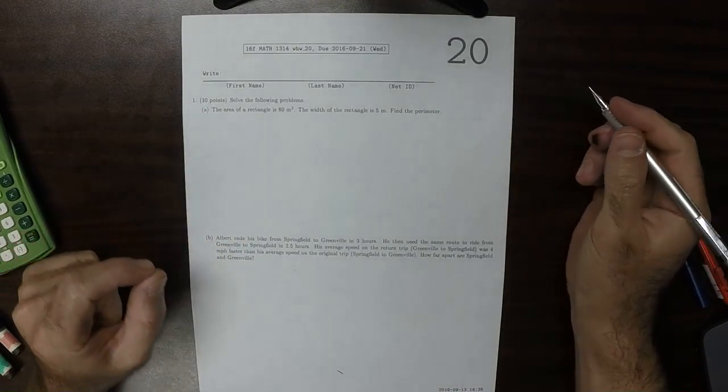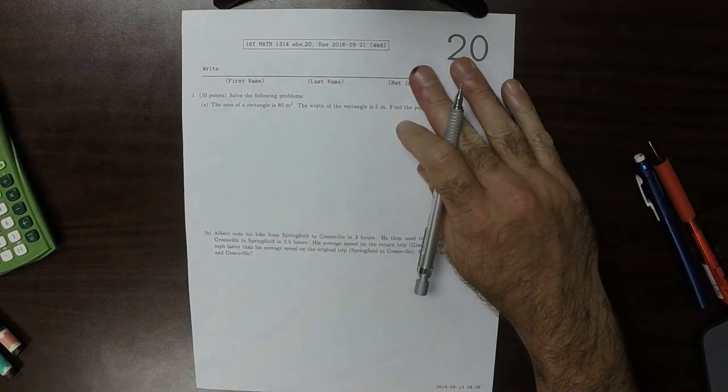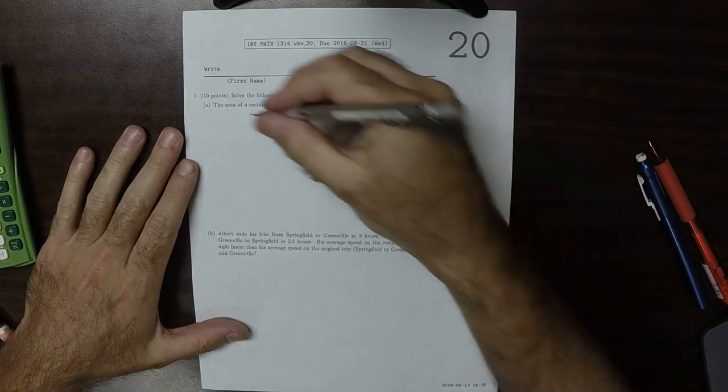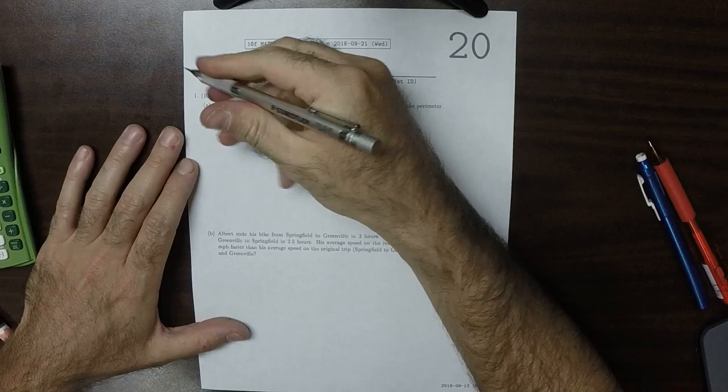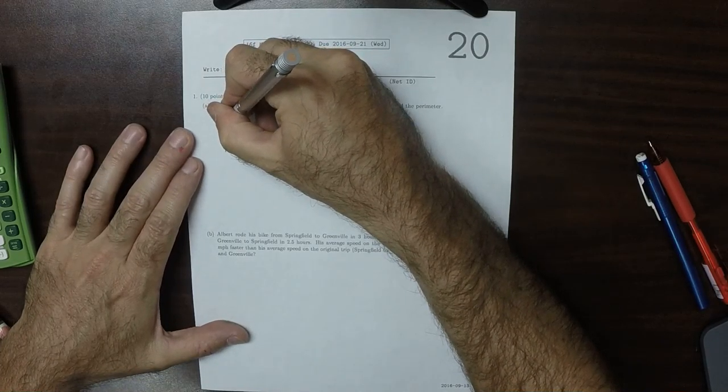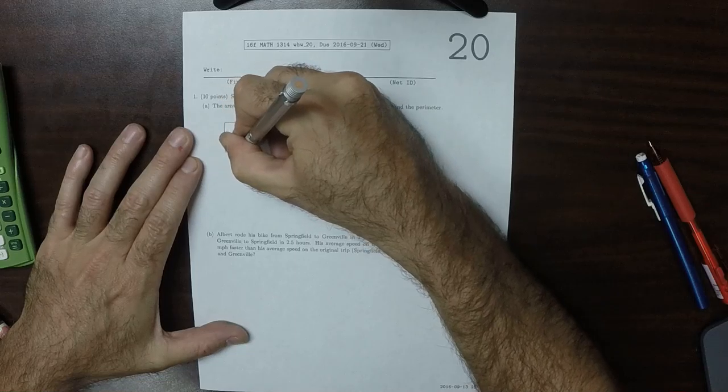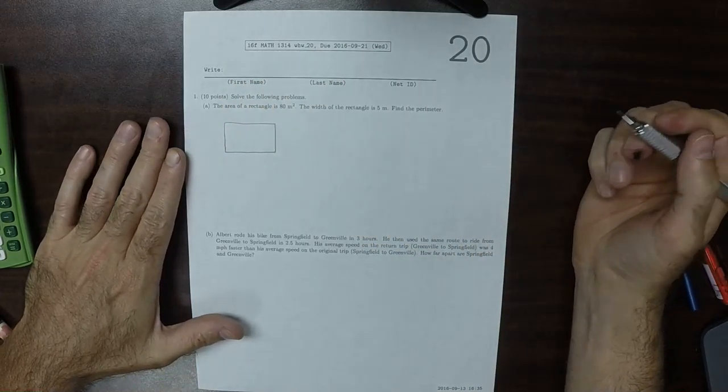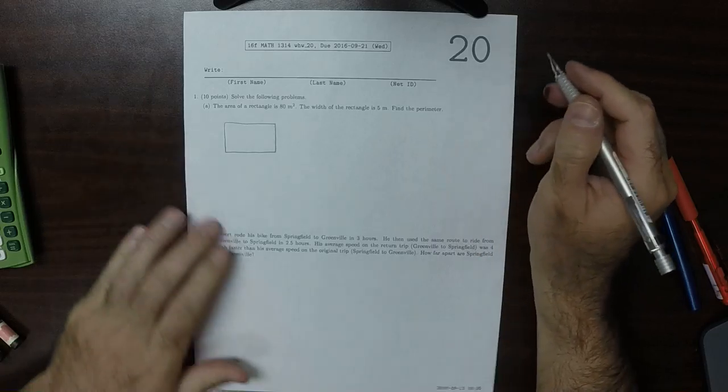This is the solution to Written Homework 20. These are word problems. So the area of a rectangle - we've got a problem involving a rectangle. Let's name the various things in our story.